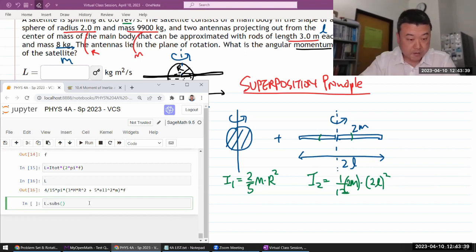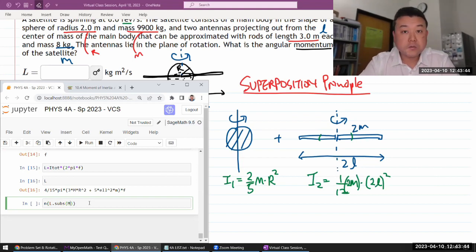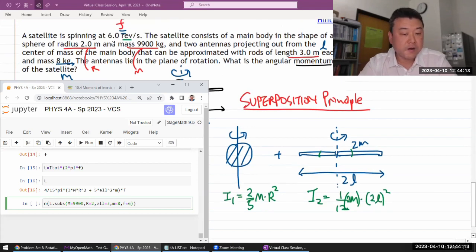Substituting everything in. Oh, I better pass this through a decimal approximation. So mass of the big sphere is 9900 kilograms, its radius is 2 meters, l is 3 meters. I think, given how light this is, we could have actually ignored it, I think. Let's just give it a try at least. Three meters, and small mass m is 8 kilograms. Oh, and frequency f is six revolutions per second, or six hertz.